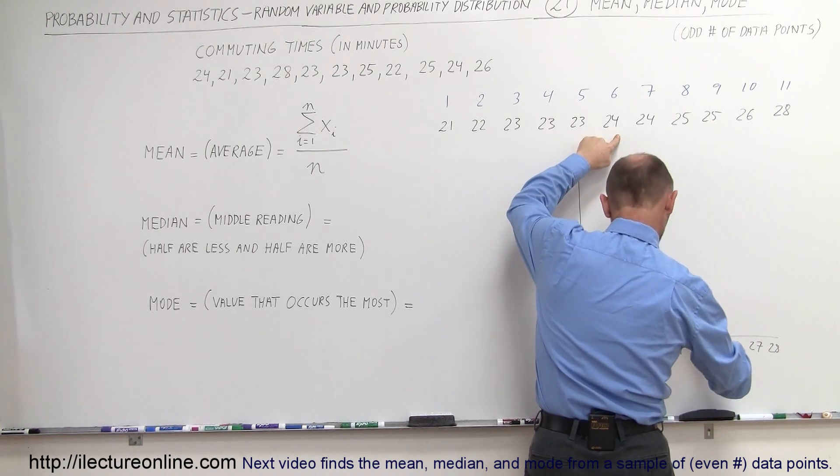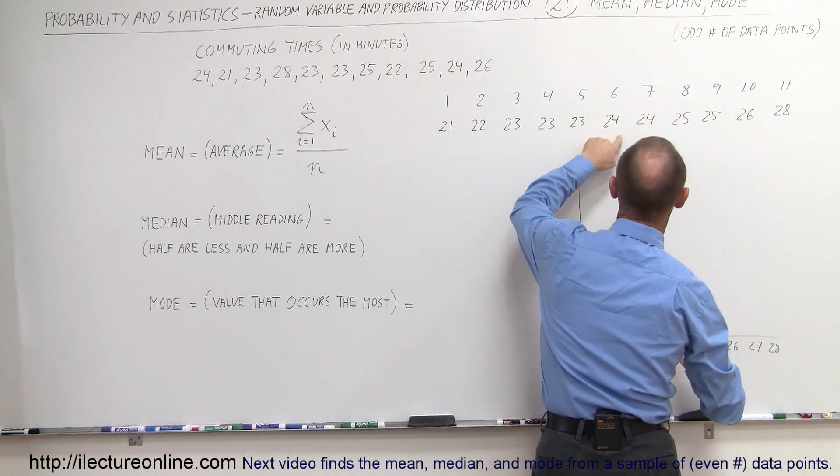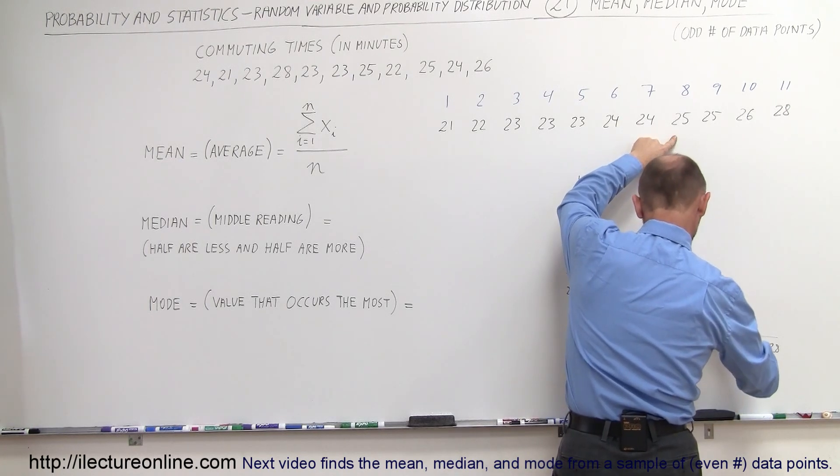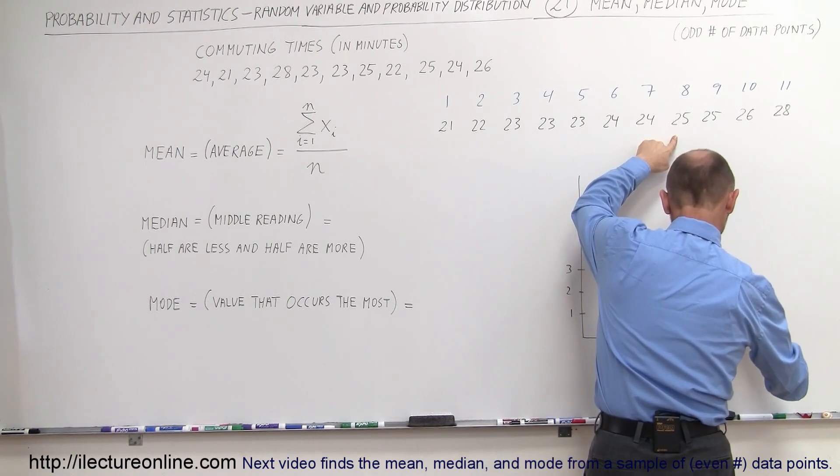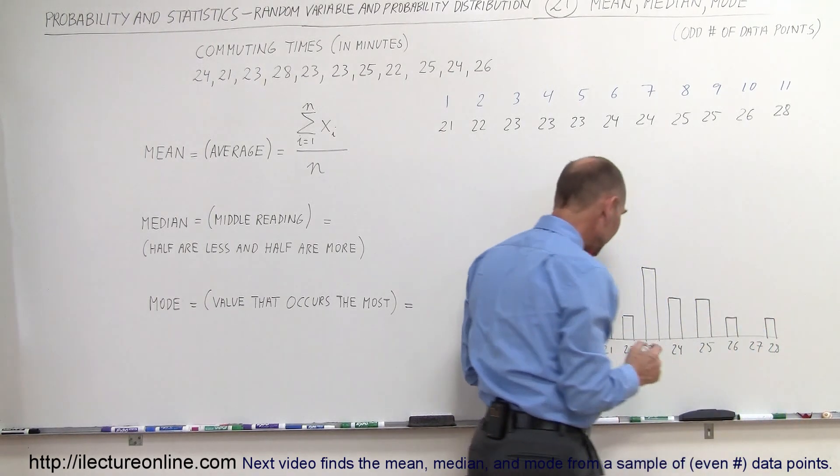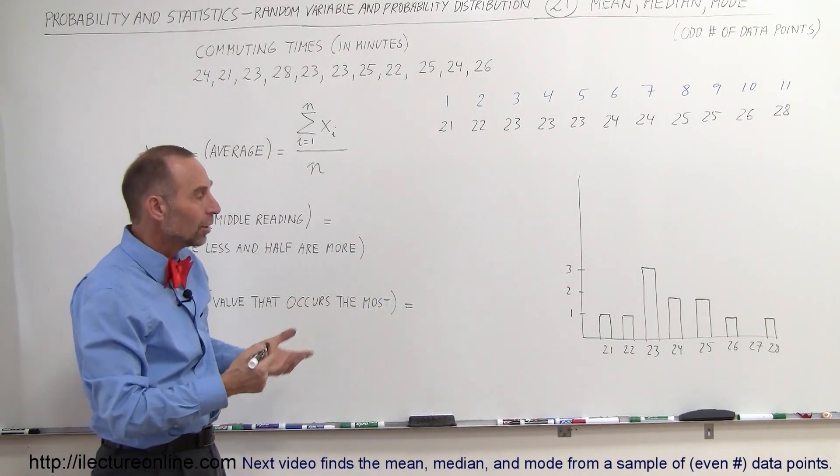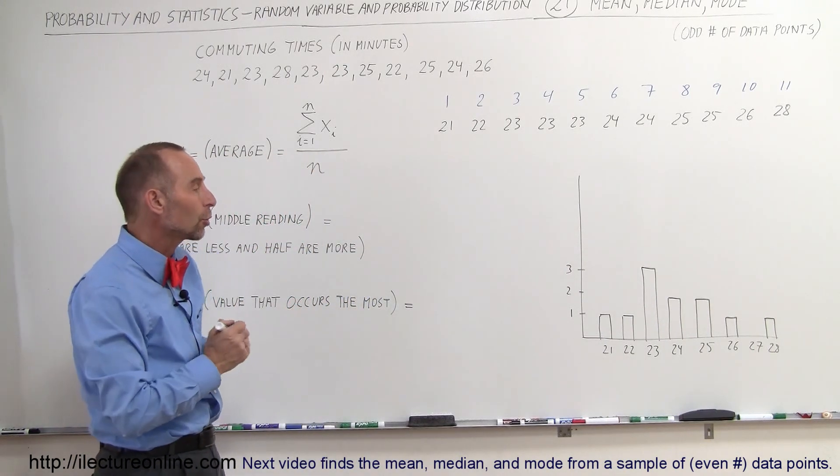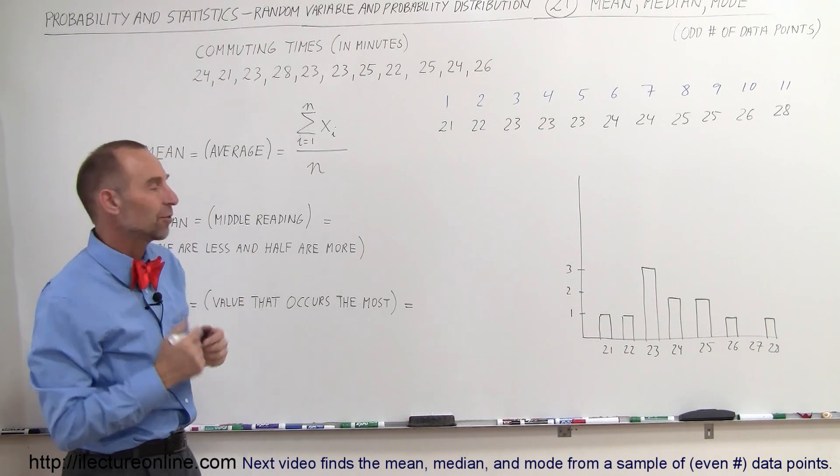24 has two occurrences. 25 has two occurrences. 26 has one occurrence. 27 does not occur, and 28 has one occurrence. So there you have a nice histogram there, which shows you the distribution, the number of times each data point occurs, and you kind of have a feel for what's going on in a graphical sense.